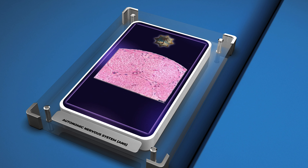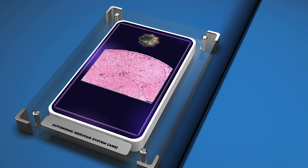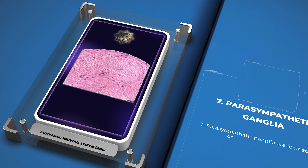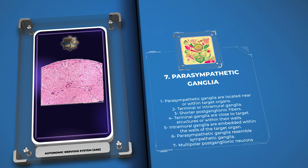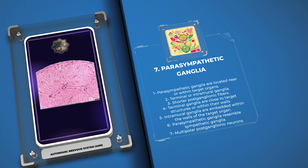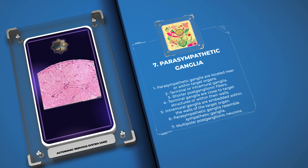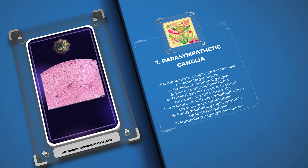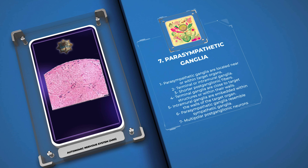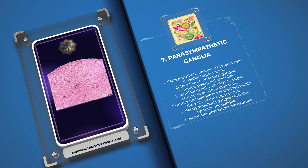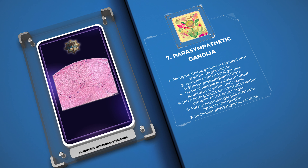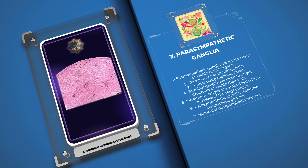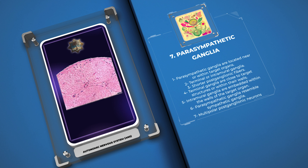Parasympathetic ganglia are located near or within target organs. Unlike sympathetic ganglia, parasympathetic ganglia are either terminal or intramural, resulting in shorter postganglionic fibers. Terminal ganglia are situated close to target structures or within their walls, while intramural ganglia are embedded within the walls of the target organ, allowing for precise parasympathetic control. The structure of parasympathetic ganglia resembles sympathetic ganglia, with multipolar postganglionic neurons surrounded by satellite cells.